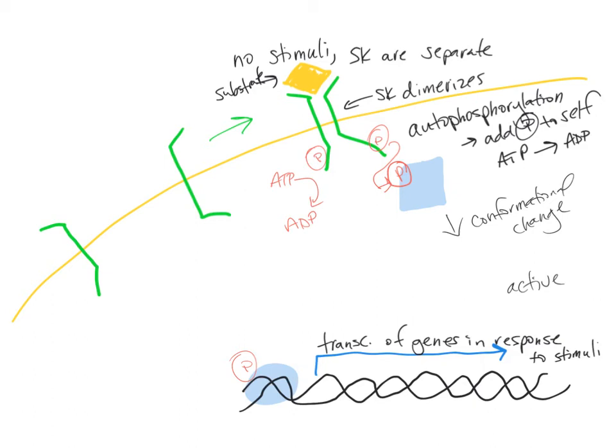Now this interaction is very, very specific. So there are hundreds of sensor kinases, each of which binds to its own substrate, and hundreds of response regulators that can interact with those sensor kinases and change gene expression.